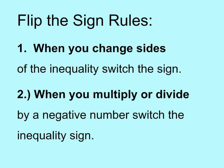The flip the sign rules are when you change sides of the inequality, so when you move the variable from the right side to the left side, you have to flip the signs. And when you multiply or divide by a negative number, we switch the inequality sign as well.